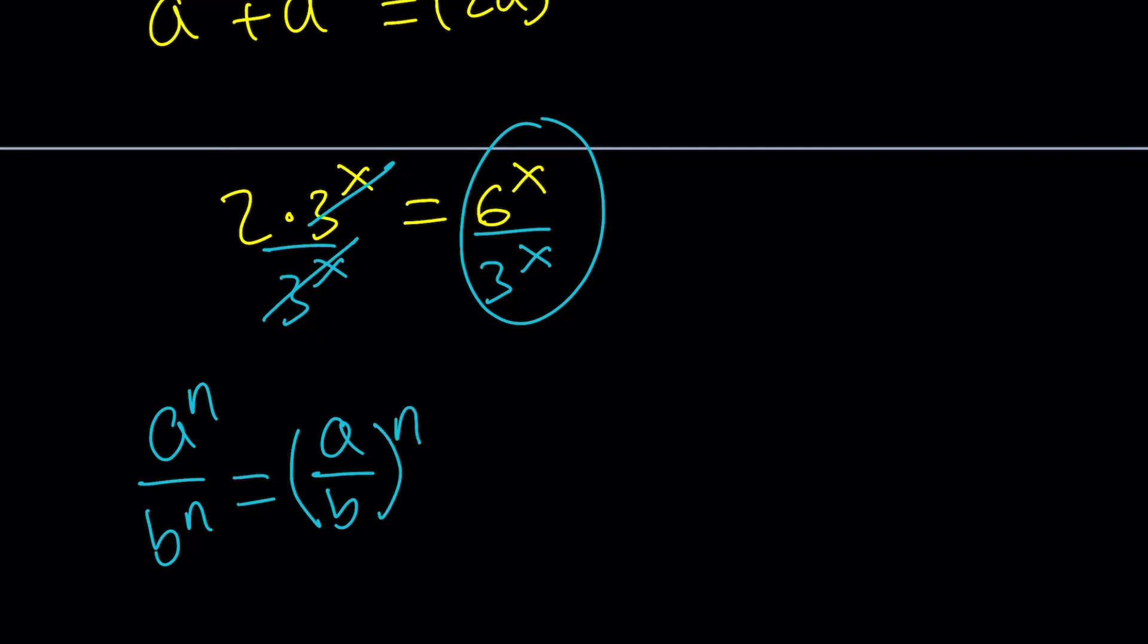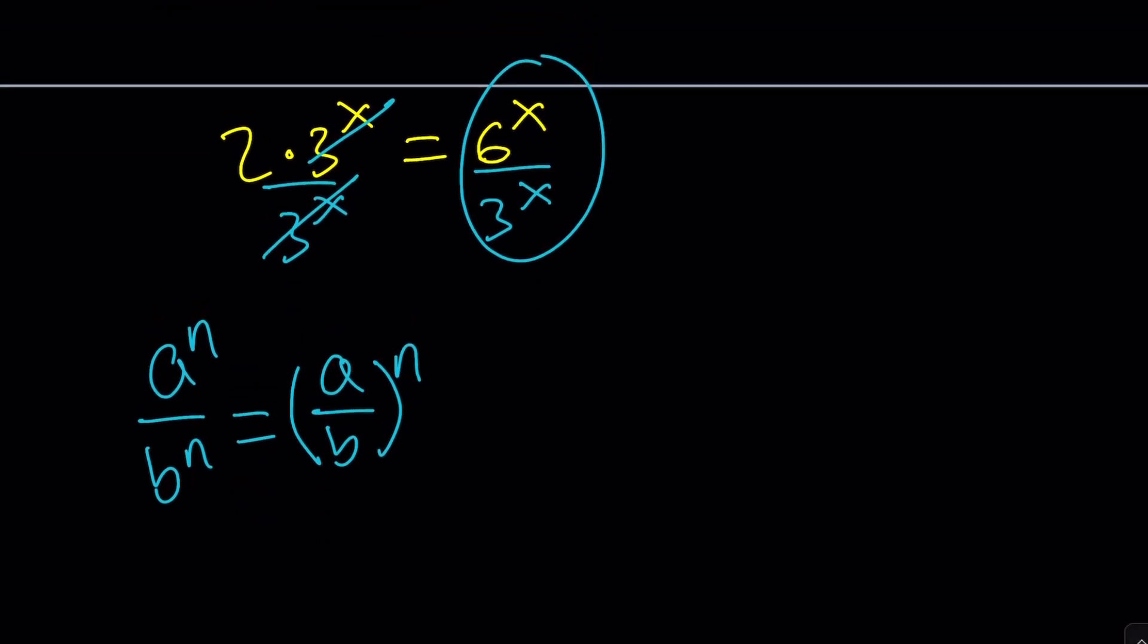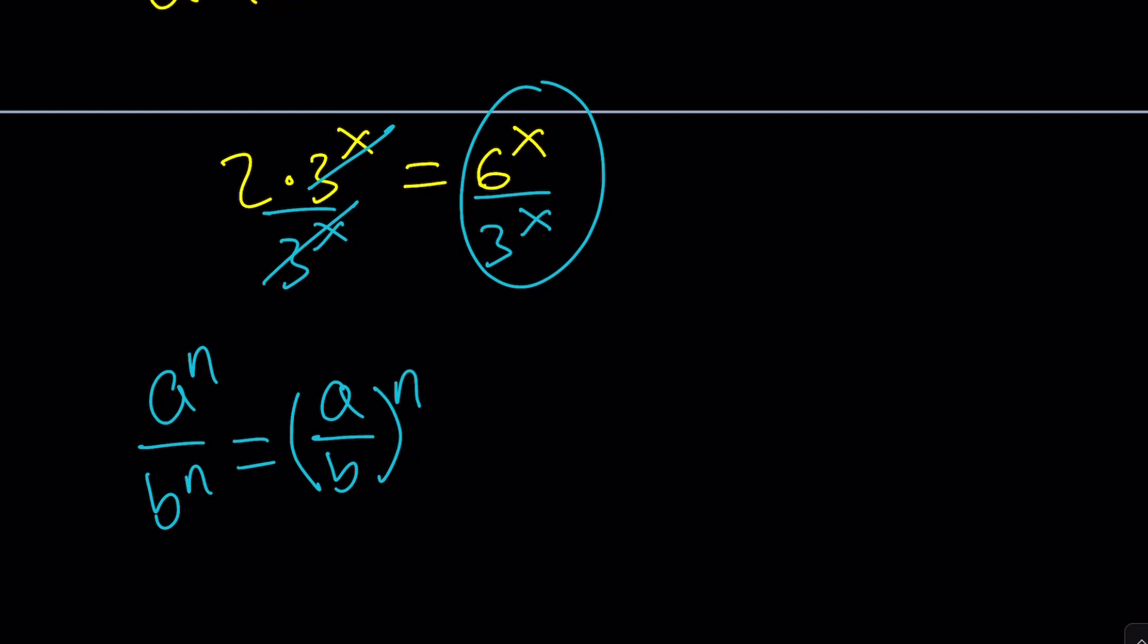Of course, we're talking about these numbers being real. What happens in the complex case? That's a different story. But from here we get the following. 6 to the x divided by 3 to the x can be written as 6 over 3 to the power x and that happens to equal 2.